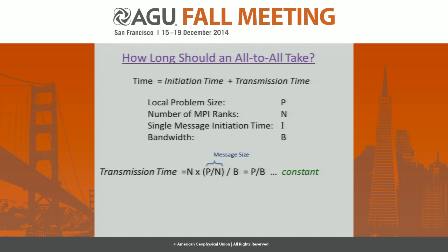The transmission time is: we're sending N messages, each of size P divided by the number of processors, divided by the bandwidth. The funny thing is that it doesn't matter how many cores you throw at this — the transmission time is always constant. So when we say spectral methods have a lot of communication causing problems, we're not saying the time to transmit the data is the problem.